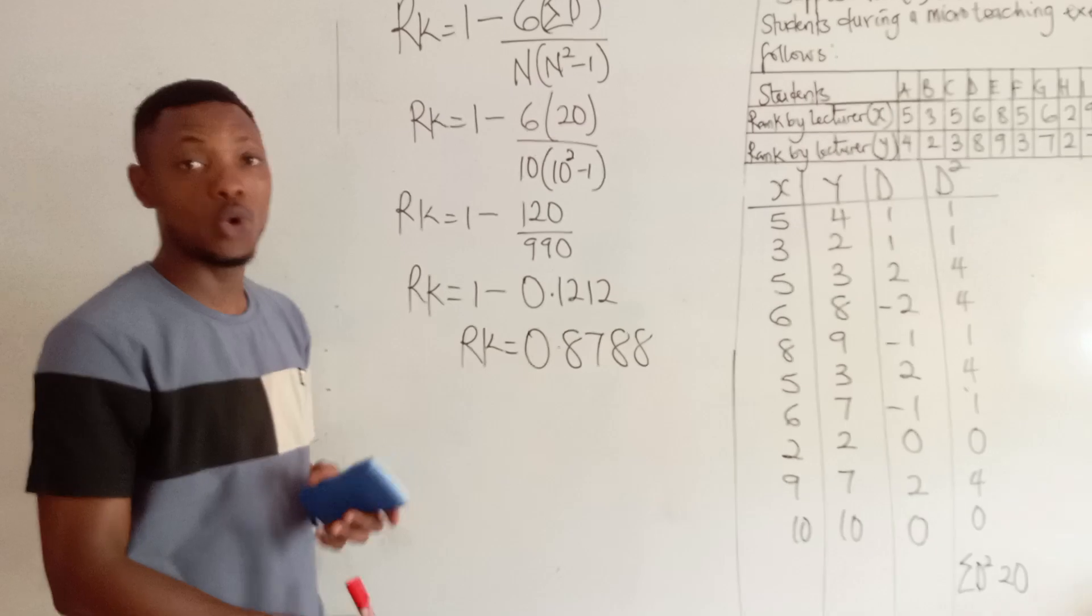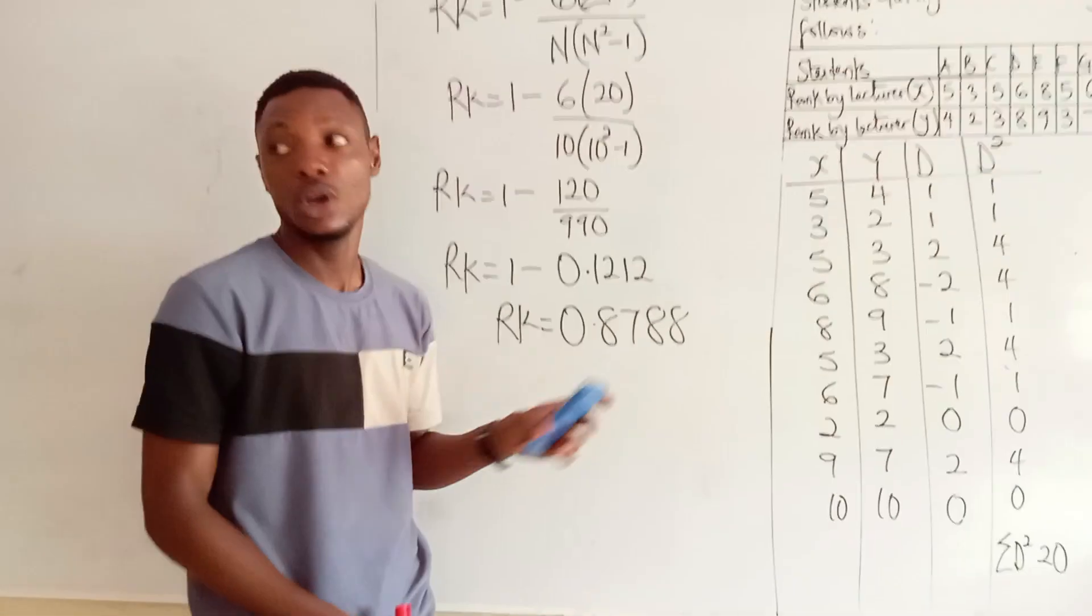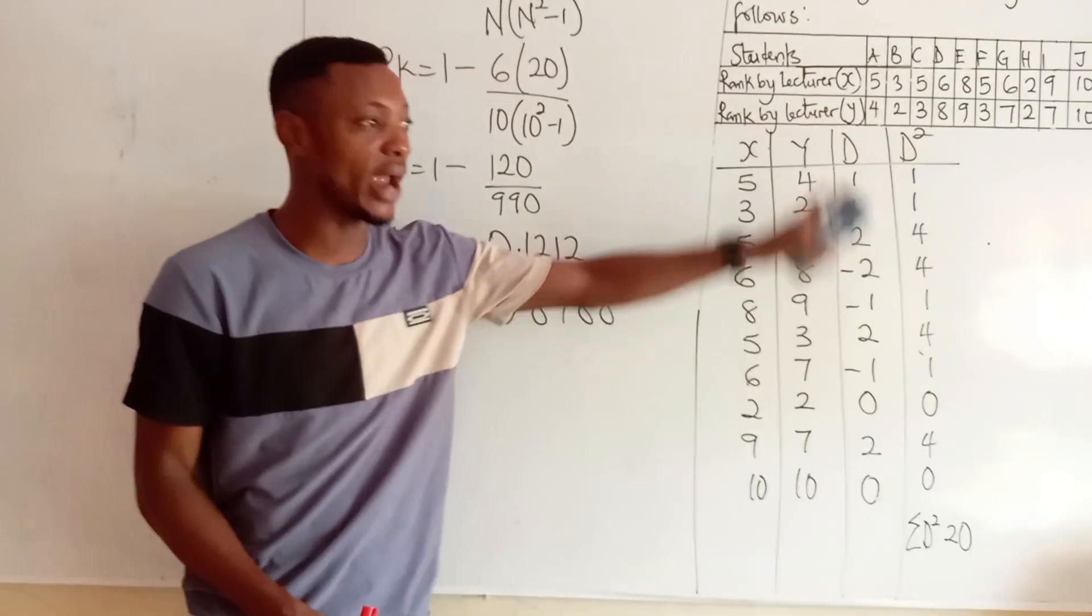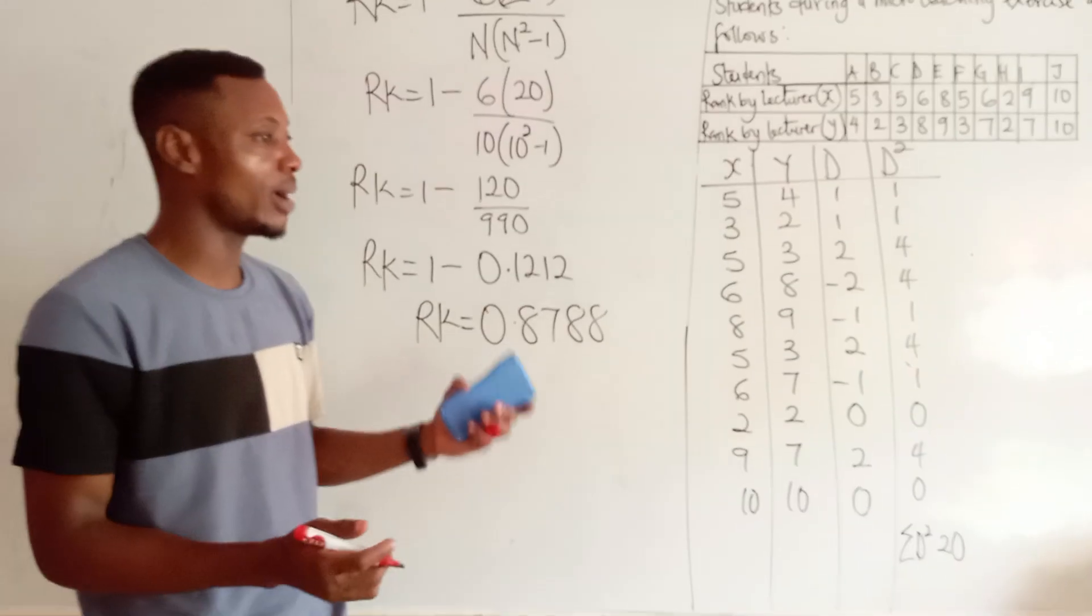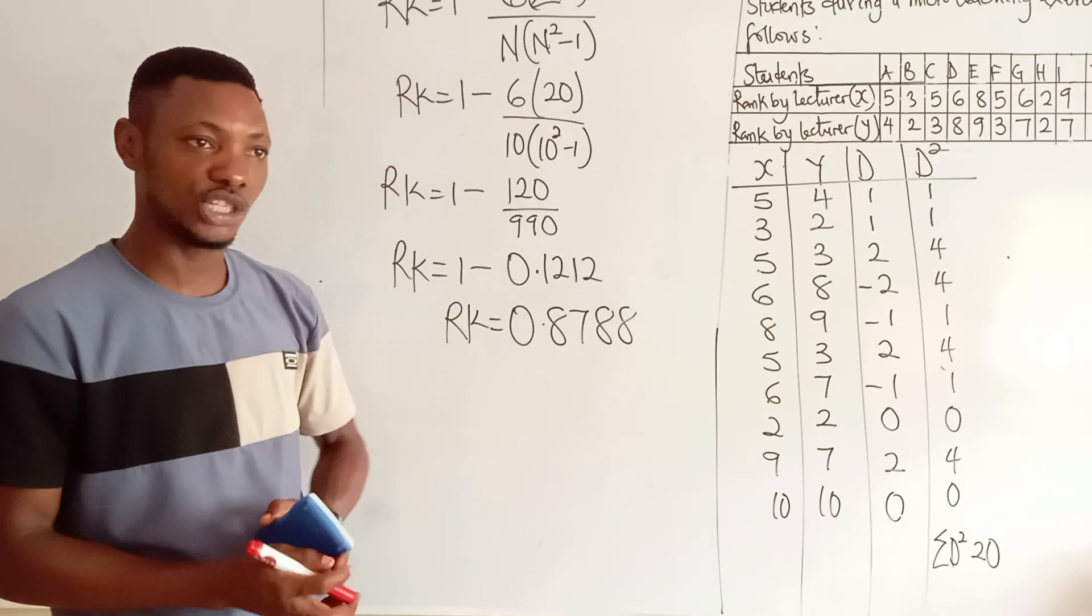Now, if we approximate this to a whole number, we see that this is a positive number. If you consider this is 1, which means that the correlation between lecturer X and lecturer Y is a positive correlation. Remember I said in our last video, if it's less than 1, it is a negative correlation.